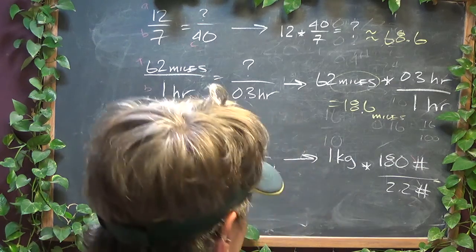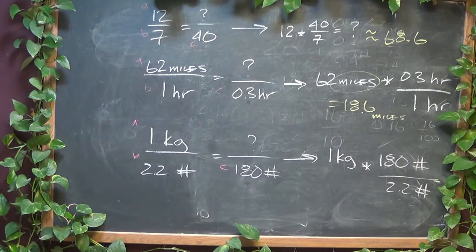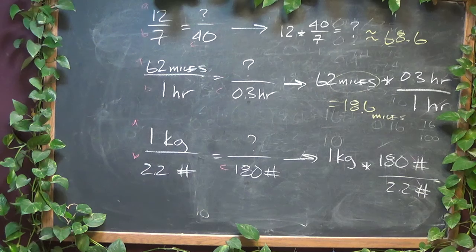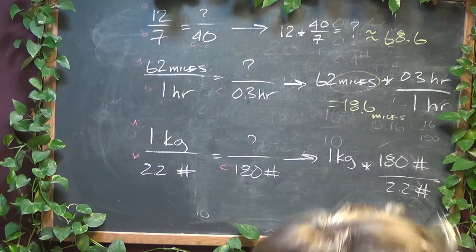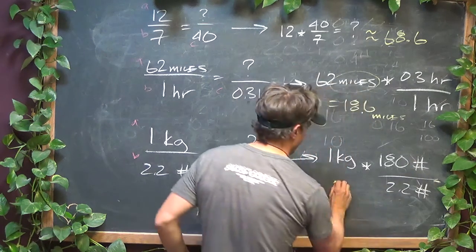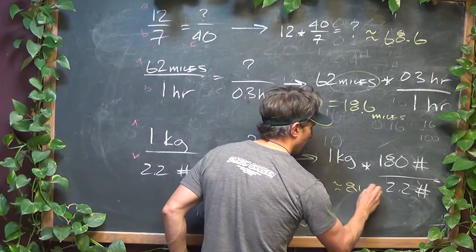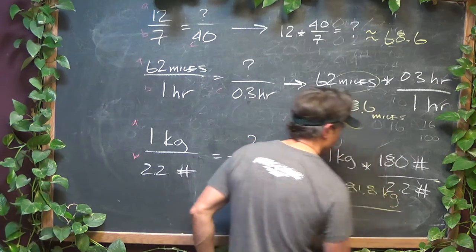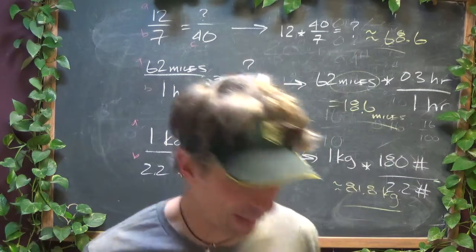And the last one, we're just going to have to do 180 divided by 2.2. And that gives us about 81.8 kilograms. There you go. There's your three results from that one.